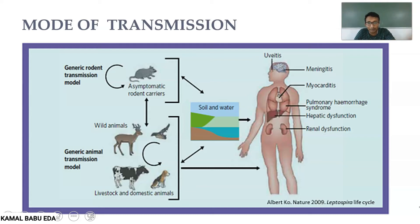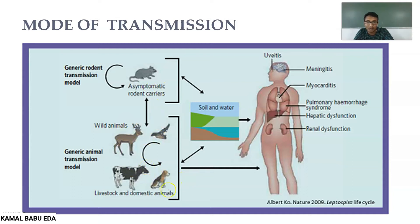Coming to mode of transmission, there are two types: the generic rodent transmission model and the generic animal transmission model. In the rodent model, disease spreads from asymptomatic rodent carriers; in the animal model, it spreads from wild animals directly to humans. Rodents can infect soil and water, and when a healthy person consumes contaminated water or has cuts or abrasions exposed to contaminated water, there is a high chance of transmission.